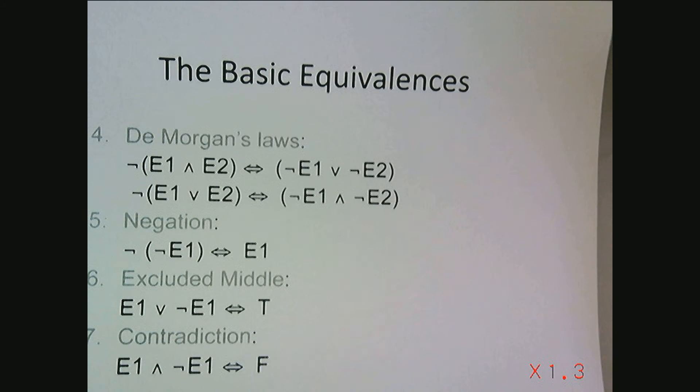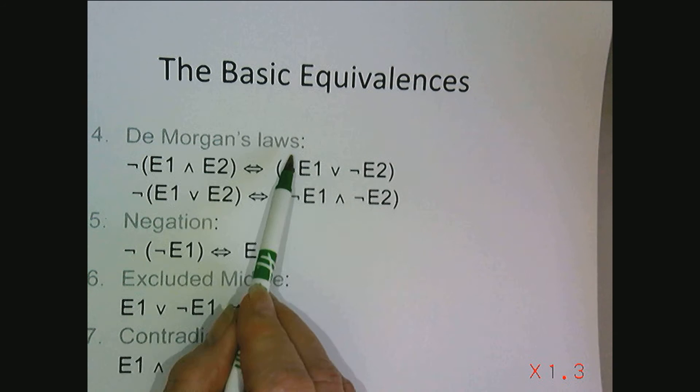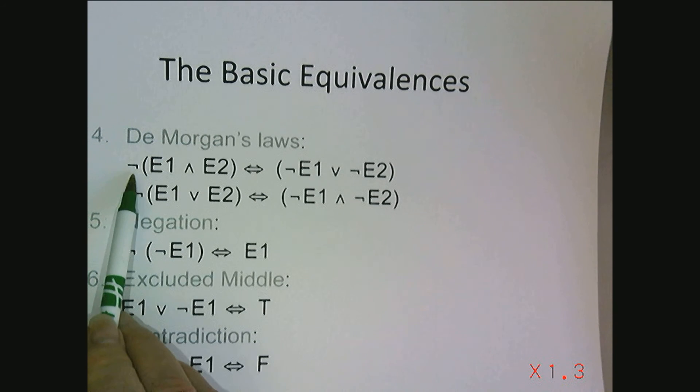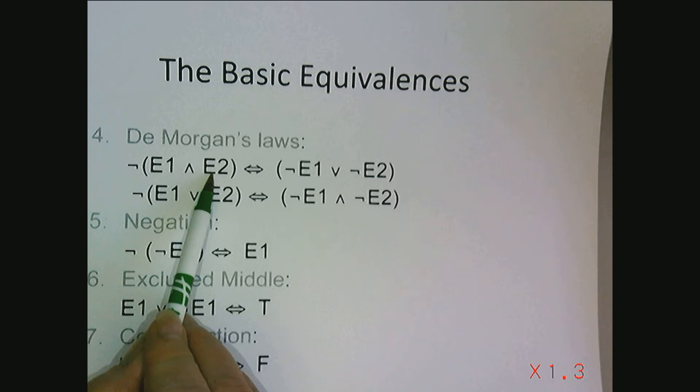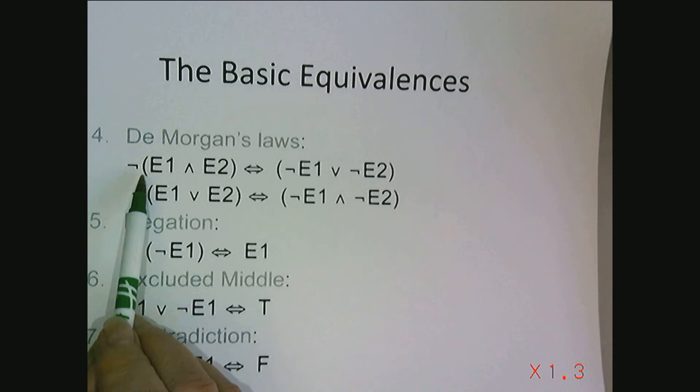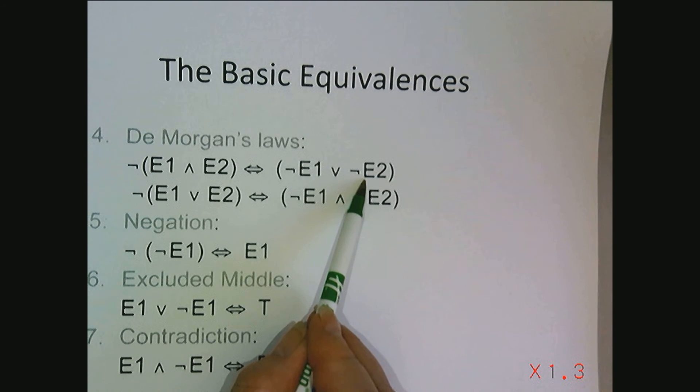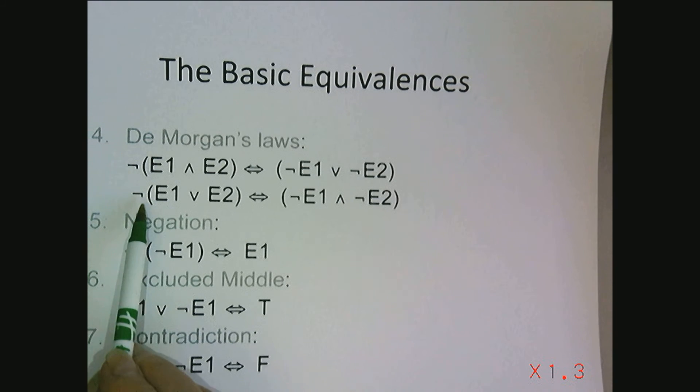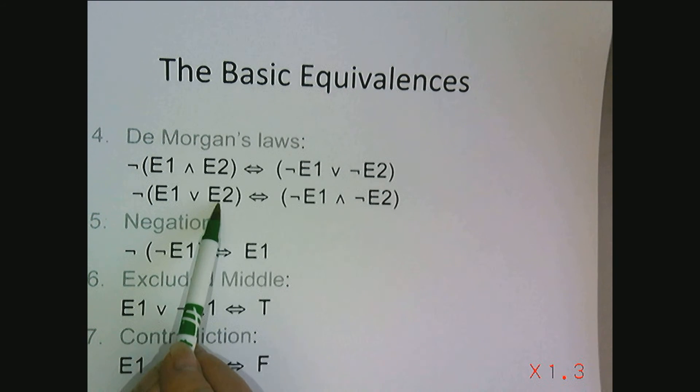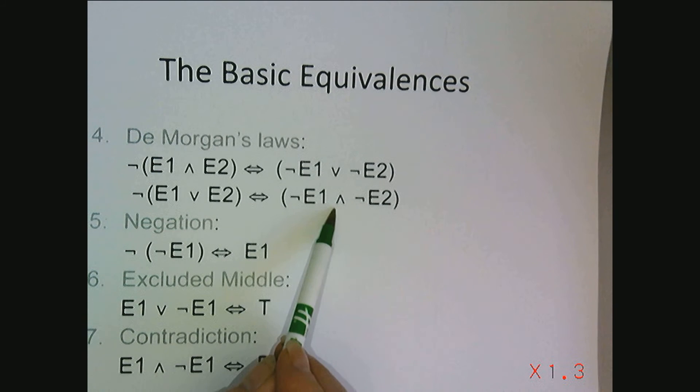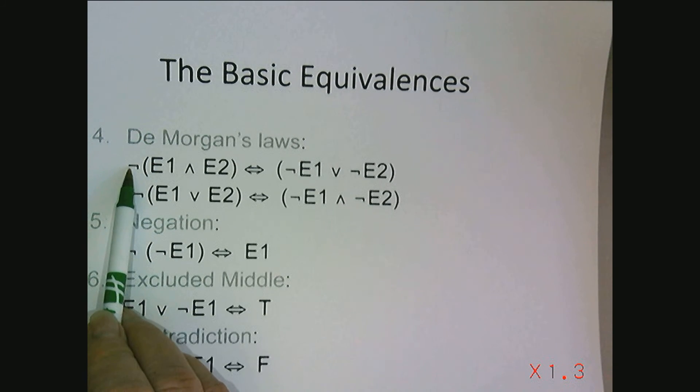Other basic equivalences that we're going to be running into are De Morgan's Law. If we have the negation of the quantity E1 and E2, that's the negation of E1 or the negation of E2. Same thing if we have the negation of the quantity E1 or E2, that's the negation of E1 and the negation of E2.